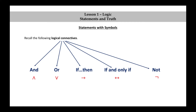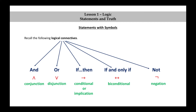We also have a noun associated with each of these logical connectives and the name of the symbol. For example, for and, we have a conjunction, and we may call the wedge a conjunction symbol. For or, we have a disjunction. For if-then, a conditional or implication. For if and only if, biconditional. And for not, a negation.